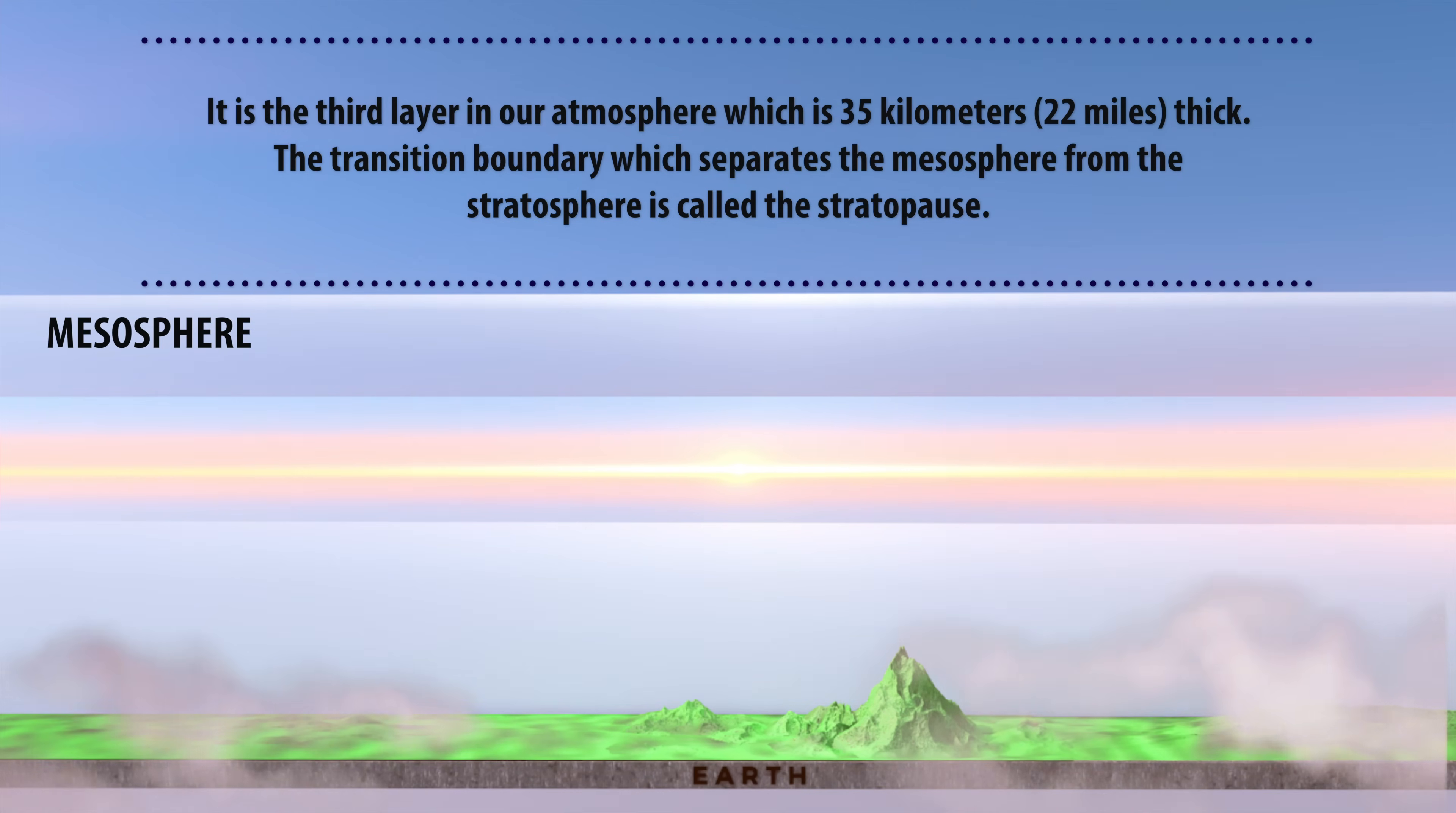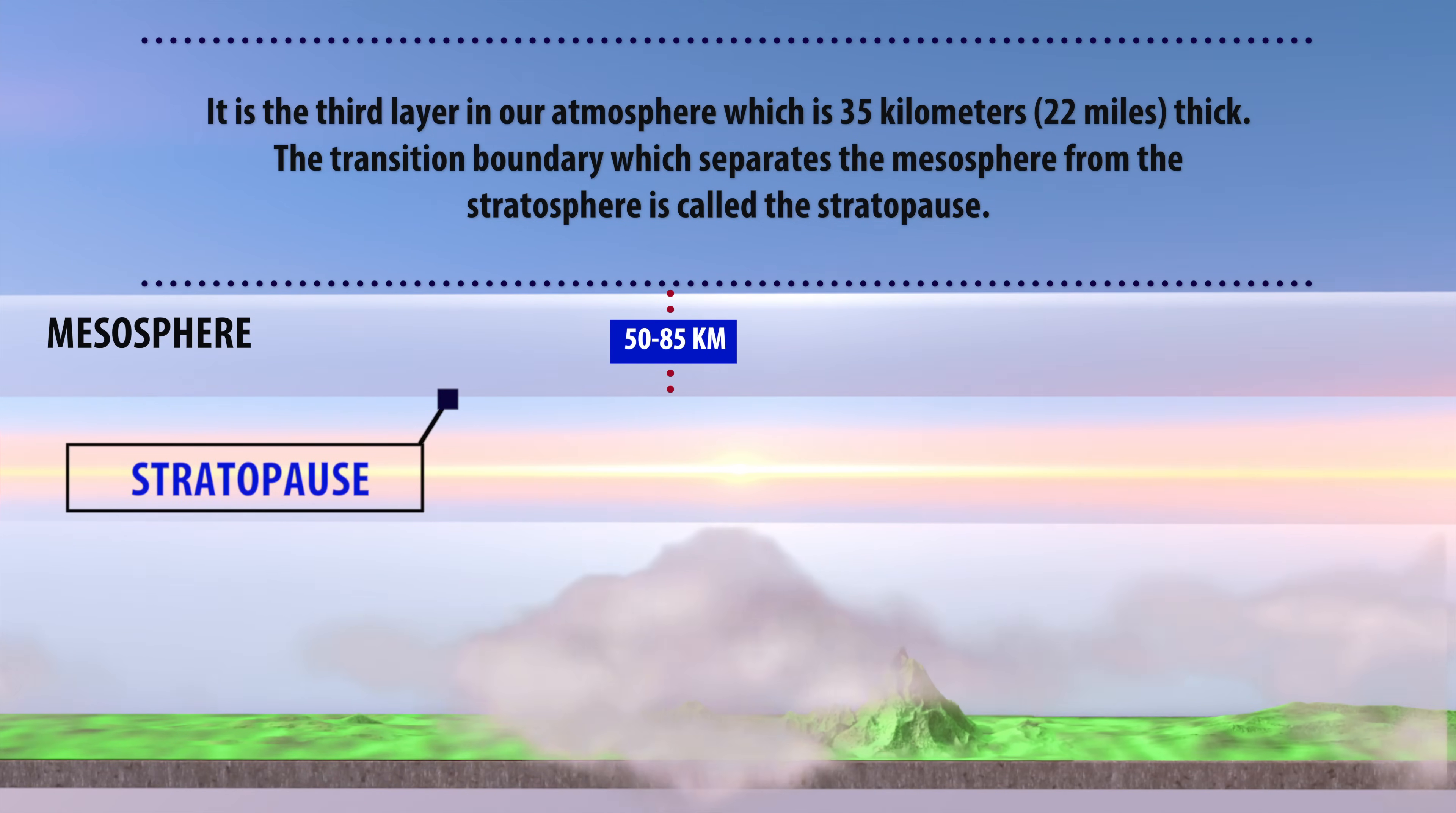It is the third layer in our atmosphere which is 35 km or 22 miles thick. The transition boundary which separates the mesosphere from the stratosphere is called the stratopause.